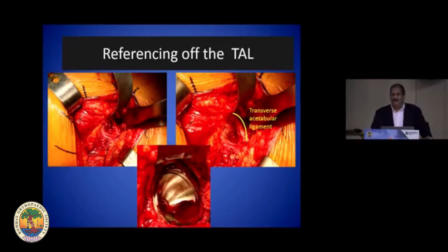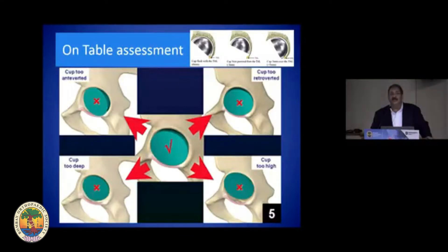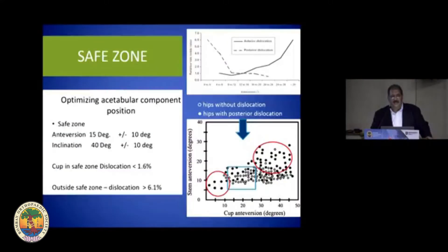The TAL, or transverse acetabular ligament, is crucial in restoring the version. It is a landmark present in most hips, whether a complex primary or even in most revisions. On-table assessment is easy if you use the TAL as your reference point — whether the cup is anteverted or retroverted, too high or too low. The safe zone as propagated in literature is quite crucial in avoiding dislocation, whether anterior or posterior.